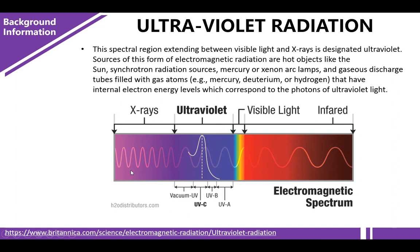These have internal electron energy levels which correspond to the photons of ultraviolet light. In the electromagnetic spectrum, ultraviolet is positioned between X-ray and visible light. This illustration also shows the different types of ultraviolet radiation: we have UVA, UVB, and UVC.